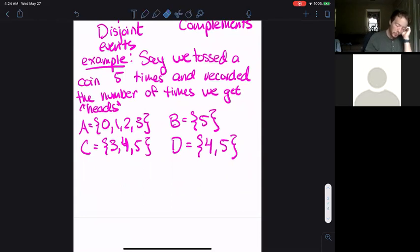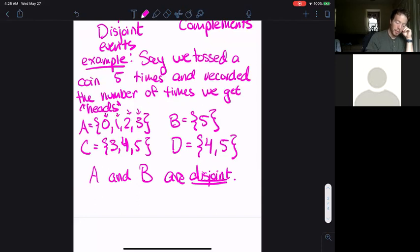Which of these events are disjoint and which are complements of each other? I would say that A and B are disjoint because there's no overlap in the outcomes. A contains the outcome zero, one, two, and three. B contains the outcome five. There's no outcome that shows up in both of them.